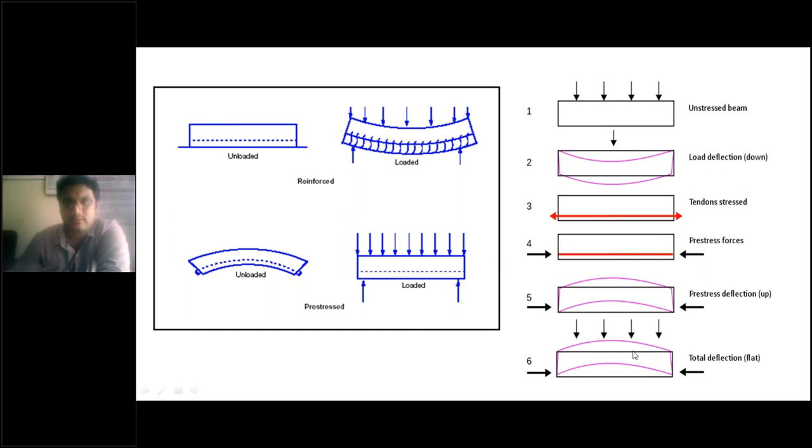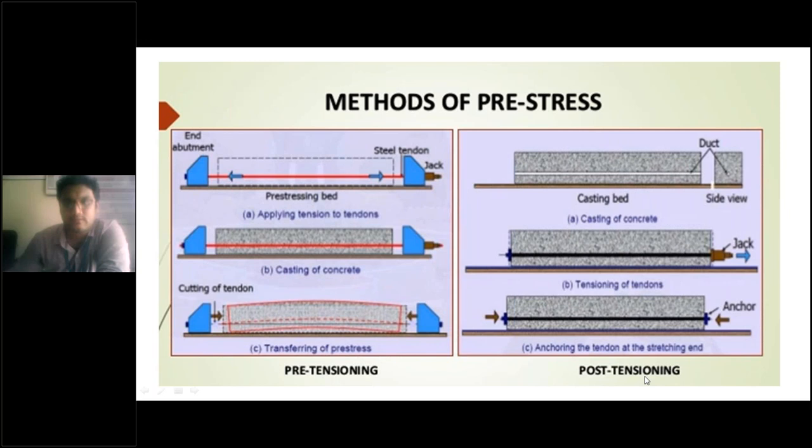This is the biggest advantage of the prestressed member. Now, the different methods of prestressing: there is pre-tensioning and post-tensioning. The major difference is that in pre-tensioning, you stress the strands before casting the concrete. In post-tensioning, you do it after concrete is cast. We are going to study these methods of prestressing in detail in coming topics.